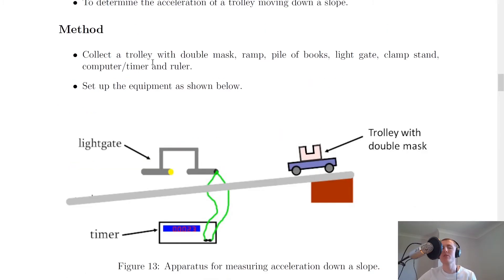The method that I've chosen says to collect a trolley with double masks. That's this thing here – that's the trolley and that's our double mask. A mask is just a bit of card cut out on top of a trolley. We also need a ramp, this thing here, pile of books to prop up the ramp.